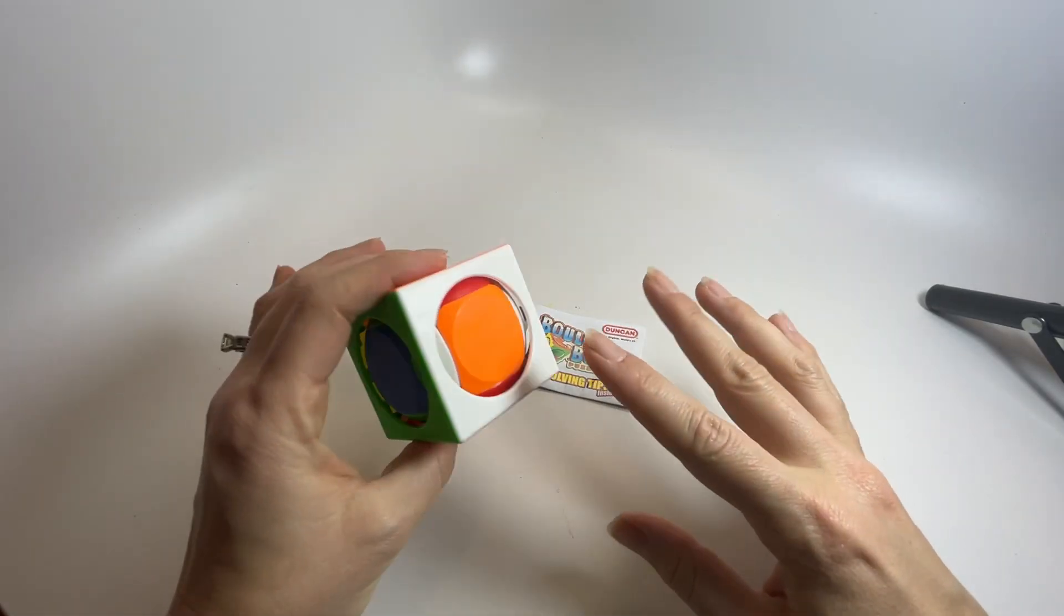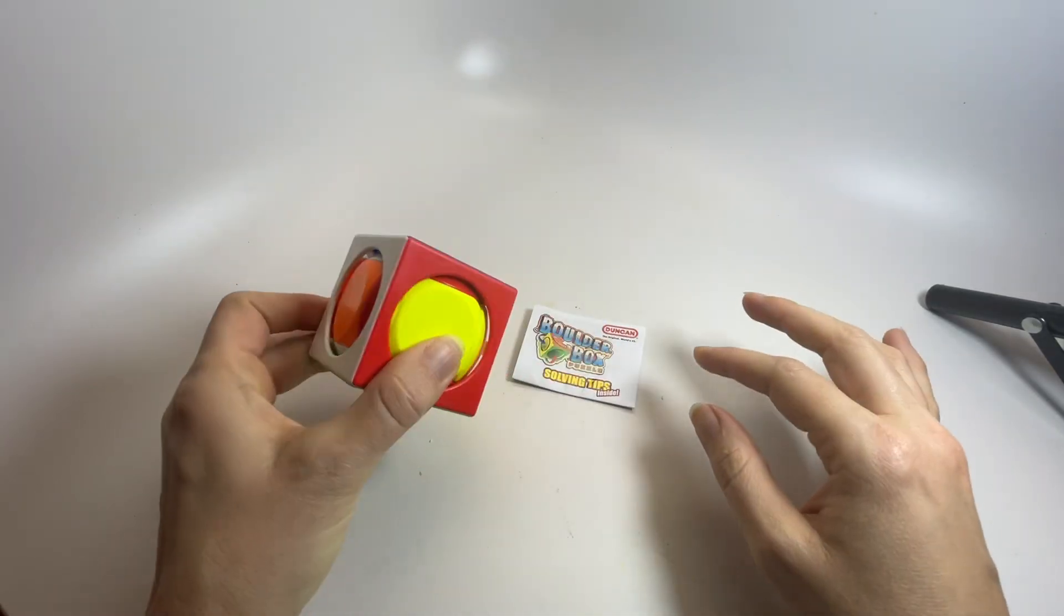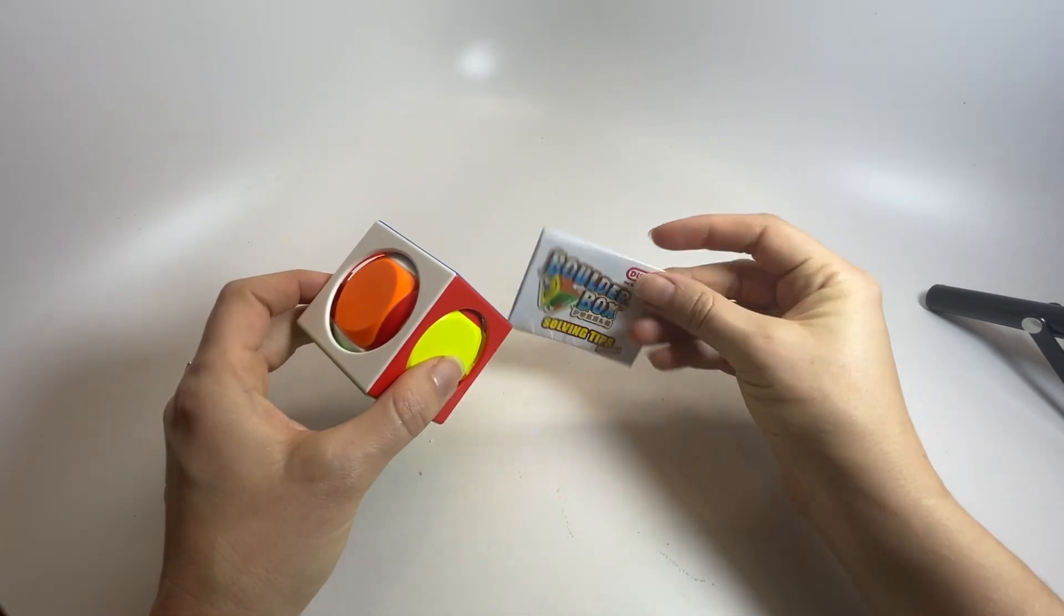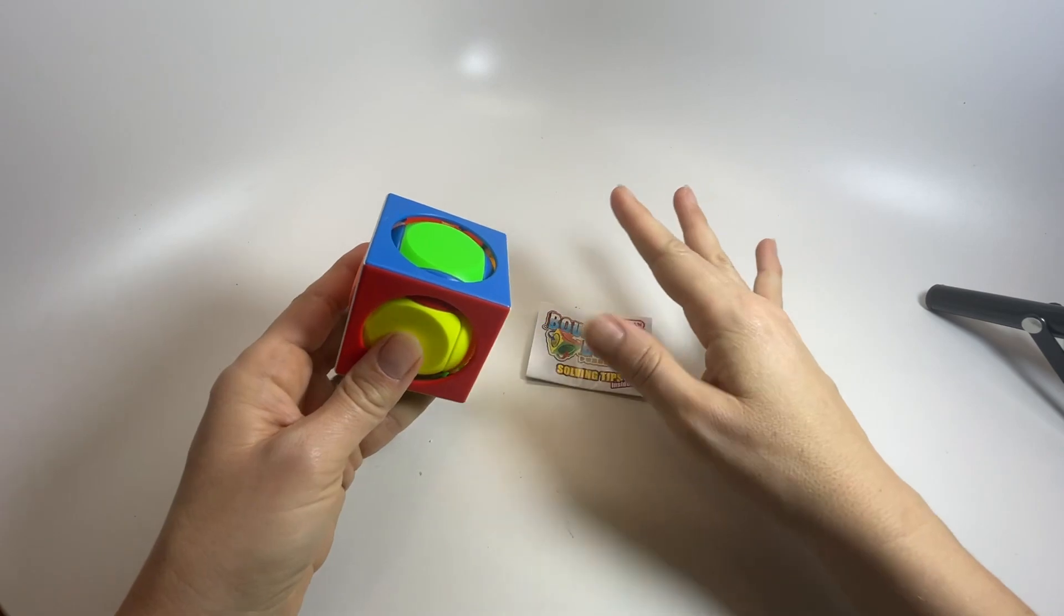Here is a new Duncan puzzle ball. It's called the boulder box. It does actually come with some solving tips, which is something I would need because I cannot figure out any of these things.